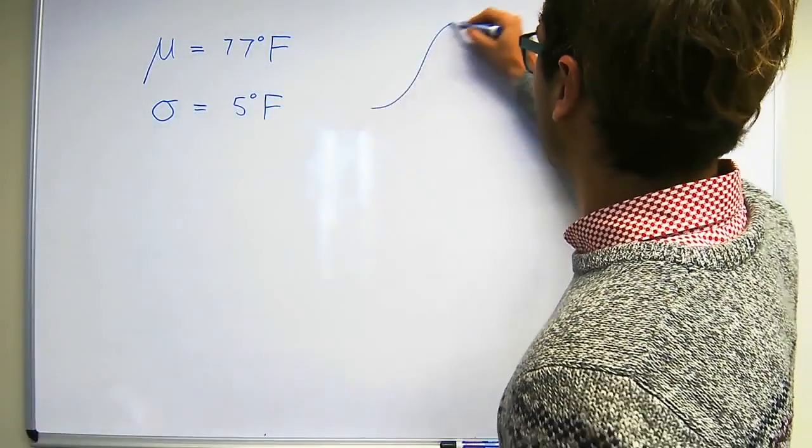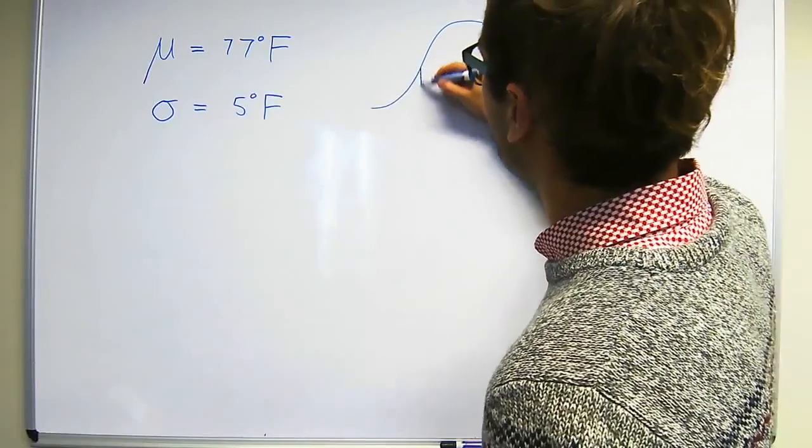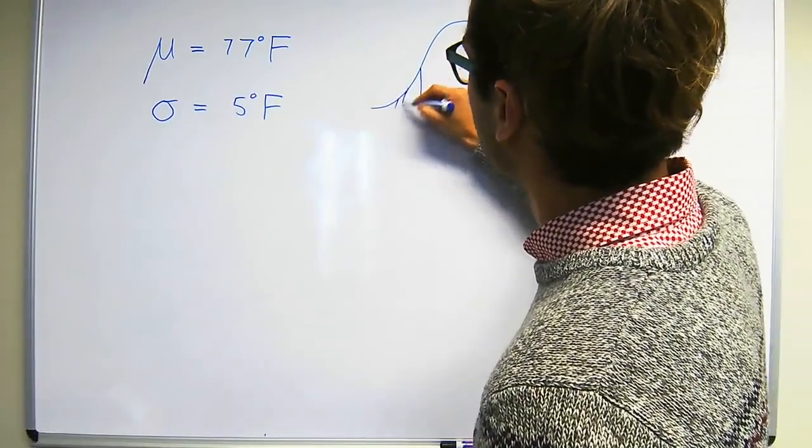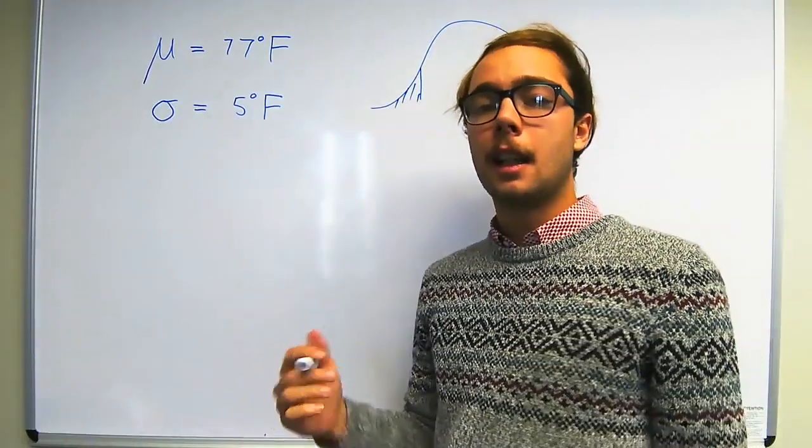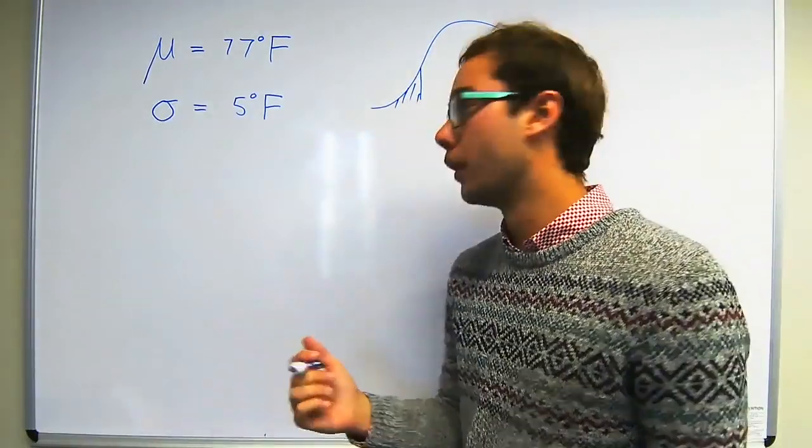The next question then asks us how cold are the coldest 10% of days in LA? So if we look at our normal distribution, what they're asking us is how cold is this coldest 10%? So this is basically doing what we just did but in reverse.